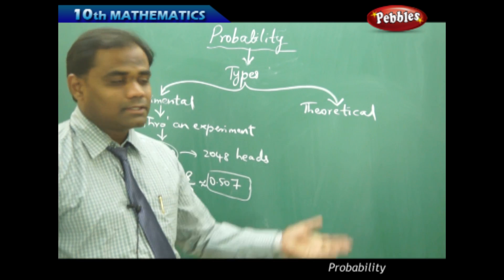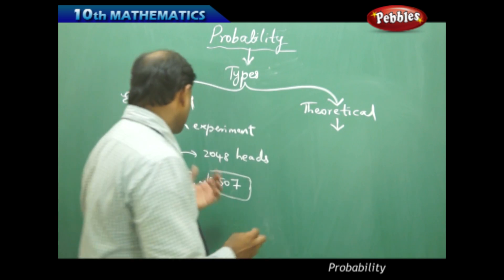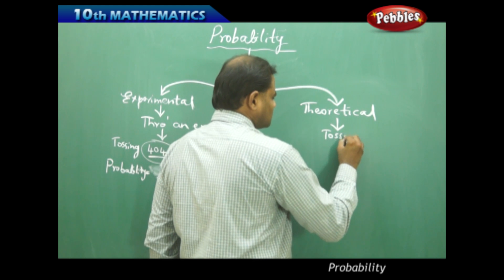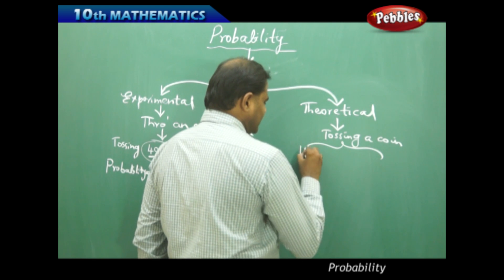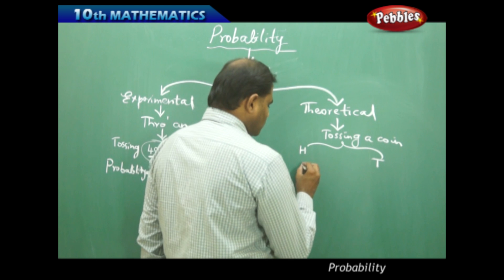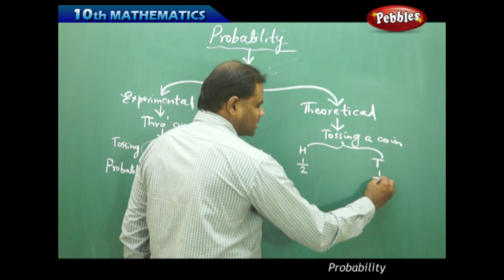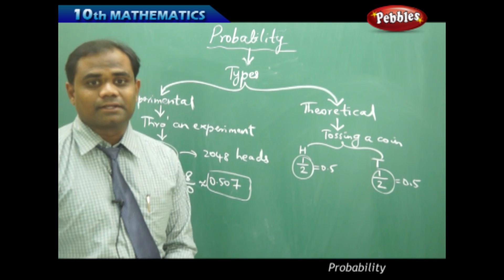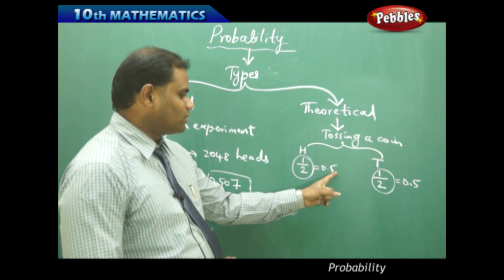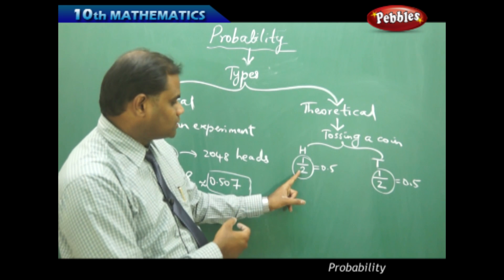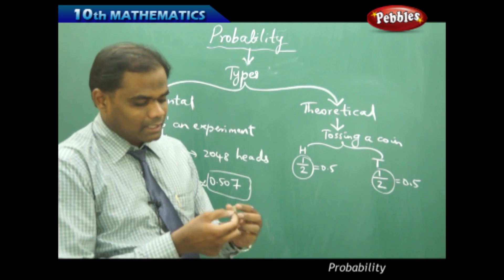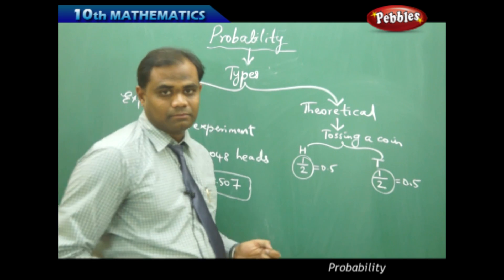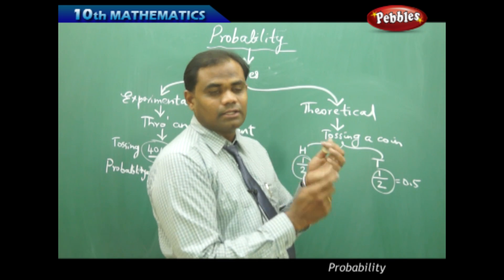Theoretical probability is not done through repeated experiments. Instead, we assume that when a coin is tossed, the possibility is either a head or a tail. Two sides of a coin give one head out of two sides and one tail out of two sides — these are the chances of getting a head or a tail.